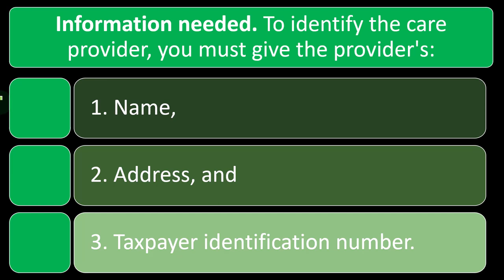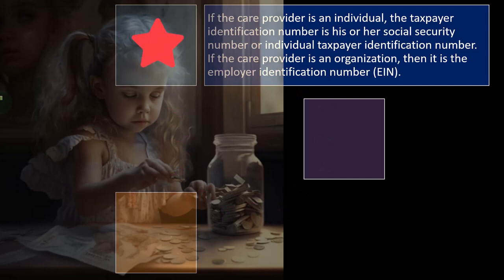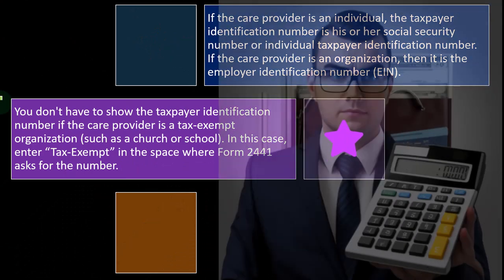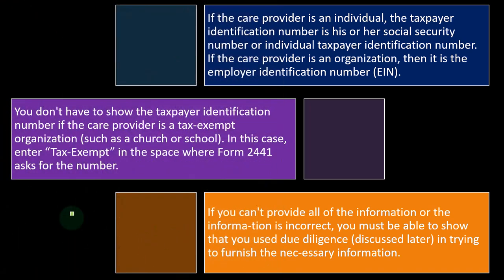The IRS wants to know who received payment for the care — their name, location, and identification number. If the care provider is an individual, the taxpayer identification number is his or her Social Security number or individual taxpayer identification number. If the care provider is an organization, it is the employer identification number (EIN). You don't have to show the taxpayer identification number if the care provider is a tax-exempt organization such as a church or school — in that case, enter 'tax-exempt' where Form 2441 asks for the number. If you can't provide all the information or the information is incorrect, you must show that you used due diligence in trying to furnish the necessary information.